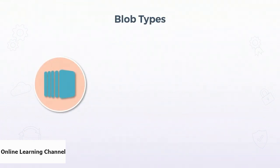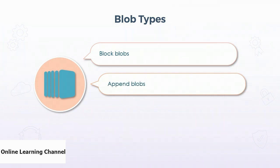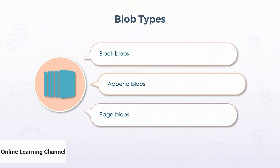Blob Storage accounts support three types of blobs, and the type is specified on creation and cannot be changed afterwards. Block blobs are best used for large amounts of text or binary data; the blob is comprised of multiple blocks assigned a unique ID that can be managed individually. Append blobs are optimized for continually appending data and function well for constant log writing, where a new block is only written to the end of the blob; they cannot update or delete already-written blocks and a block can be up to 4 megabytes in size. Page blobs are used for random access storage; blocks are 512 bytes in size and the blob can be modified from a single page up to 4 megabytes in individual page increments.